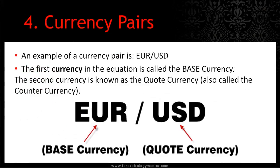An example of a currency pair is the Euro-USD. The first currency in the equation is called the base currency. The second currency is known as the quote currency, which has also been dubbed the counter currency. So in the pair of the Euro-USD, the Euro is first, the USD is second. The base currency in this case is the Euro, and the quote currency in this case is the US dollar.